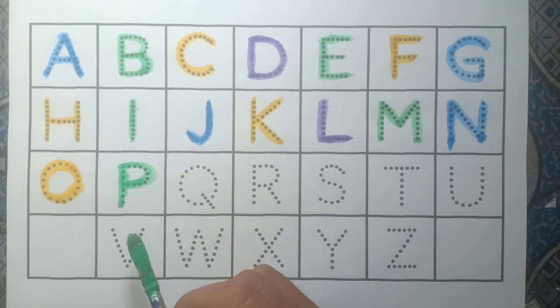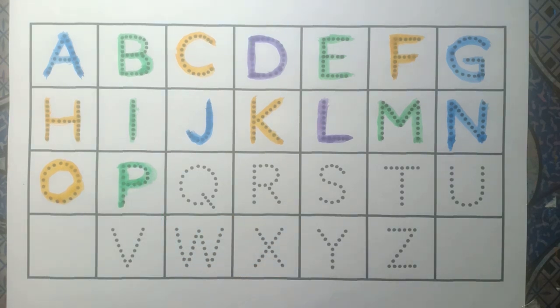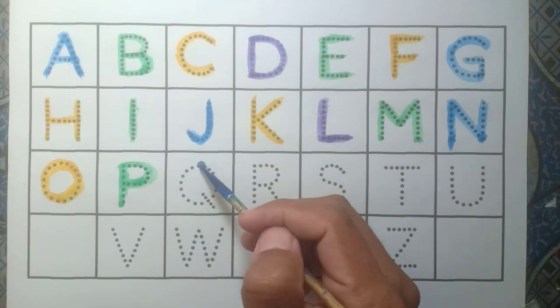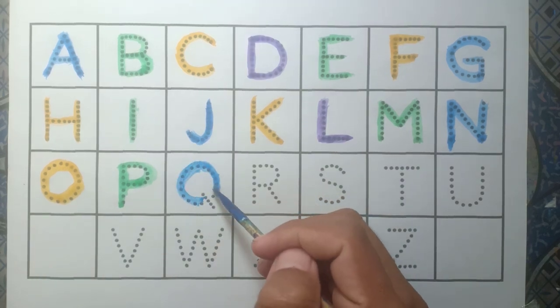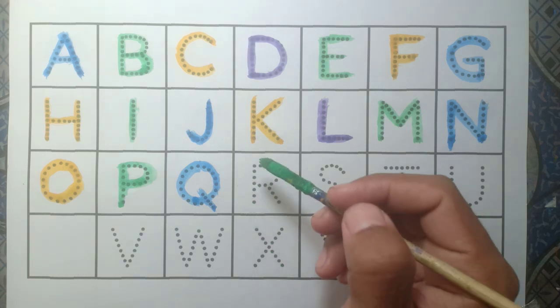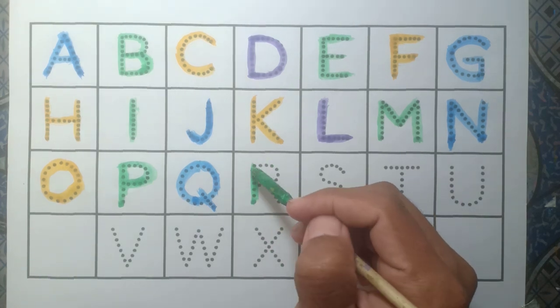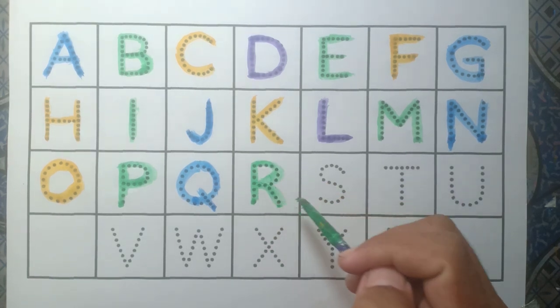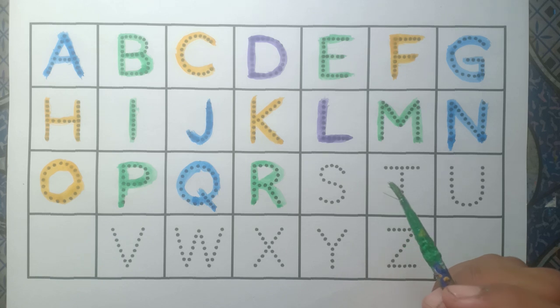P for panda, green color. And Q, Q for queen, blue color. And R, R for rabbit, green color.